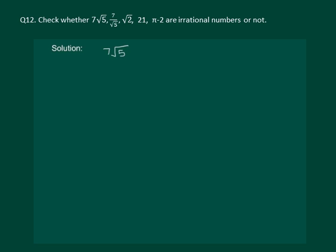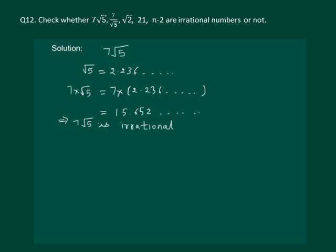Let us read the question: check whether 7 into root 5 is an irrational number or not. We know that root 5 is an irrational number and its value is 2.236 and so on. So 7 into root 5 will give us 7 into 2.236 non-terminating, which is equal to 15.652 and so on. This implies that 7 root 5 is irrational.